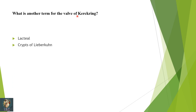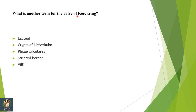Next: what is another term for valves of Kerckring — lacteal, crypt of Lieberkühn, plica circularis, striated border, or villi? The plica circularis are also called the valves of Kerckring. This is a very important question that is commonly present in exams.